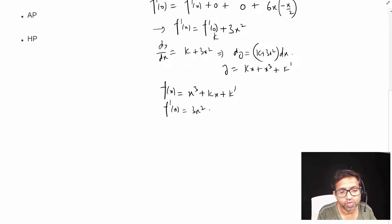See what happens when I take second derivative - this is 6x, this becomes 0, k becomes 0 and k' becomes 0. This is my second derivative.